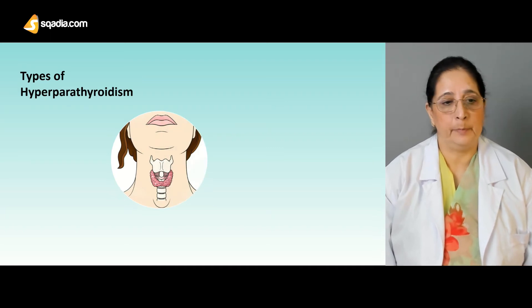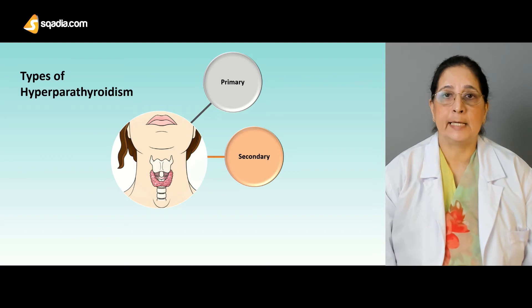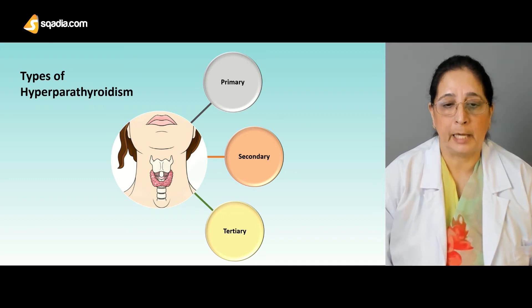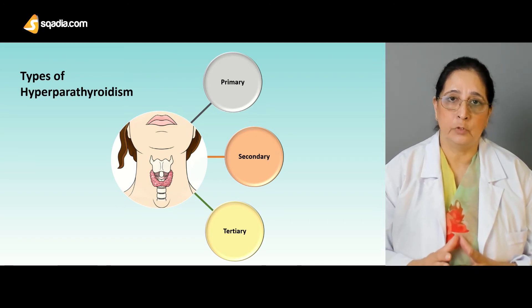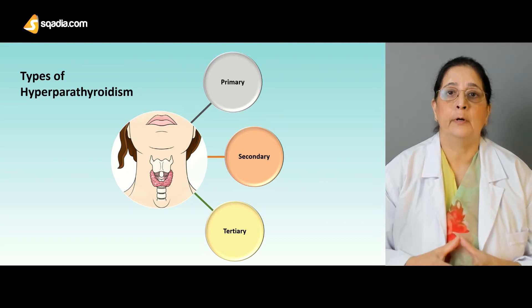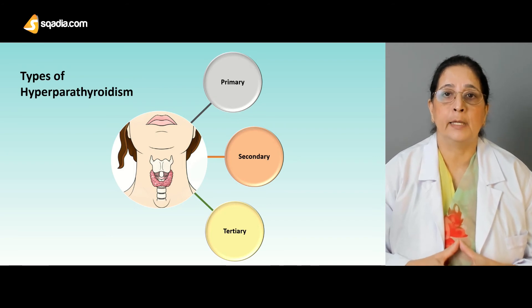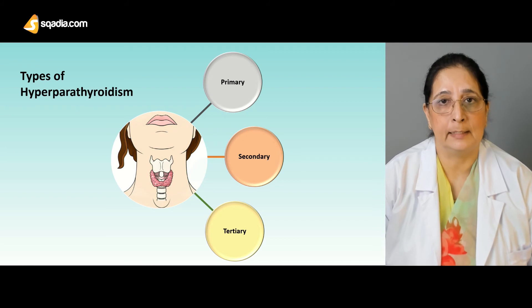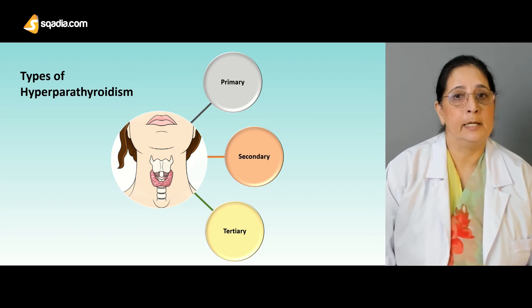There are three main types of hyperparathyroidism: primary hyperparathyroidism, secondary hyperparathyroidism, and tertiary hyperparathyroidism. Primary is the most important and most common type. We will talk about all three types of hyperparathyroidism in detail in the next few slides.